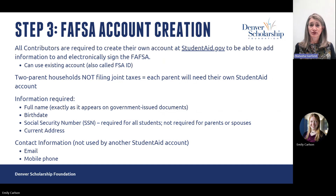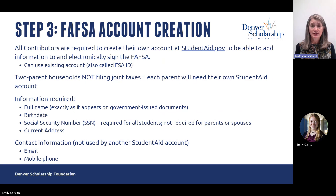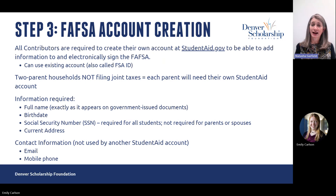What each person needs to get started creating their account is their full name exactly as it appears on their driver's license, passport, birth certificate, or other government-issued document. They'll need their birth date and their social security number if they have one. Students are required to have a social security number, but one is not required for parents or spouses. They'll also need their current address. Each person also needs their own unique email and a mobile phone number — the email and phone cannot be shared with another student aid account. If a parent doesn't have an email address, students are often able to help create one.